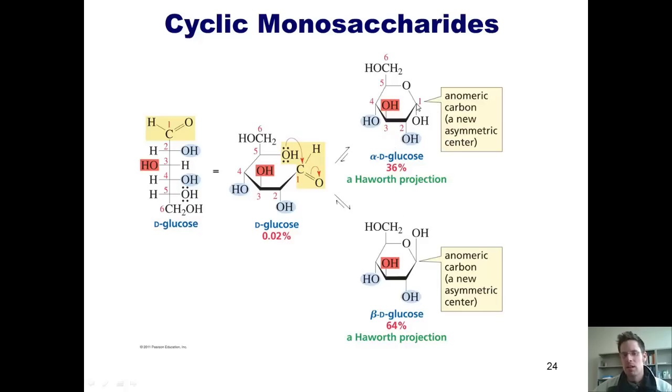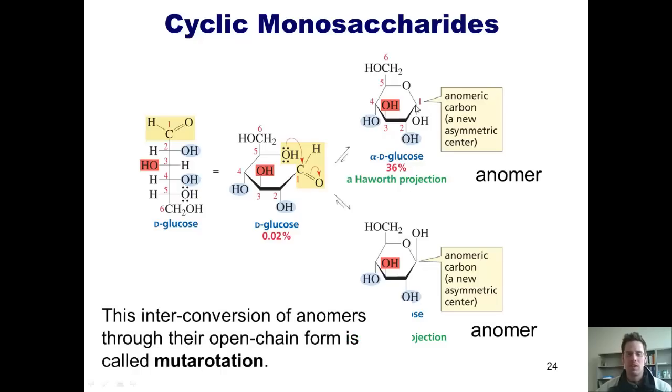this carbon that began as being the carbonyl carbon upon which the OH closed to form these two rings. So this anomeric carbon, if we have the opposite stereoconfiguration between two different structures, these two different structures are called anomers of each other. One other thing that I should tell you is that this entire process of interconverting between these two ringed forms and the straight chain form is called mutarotation.